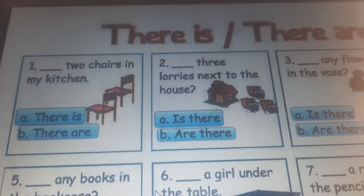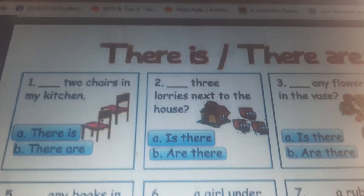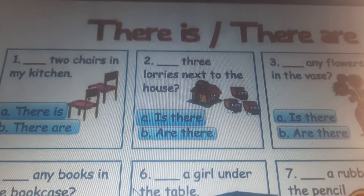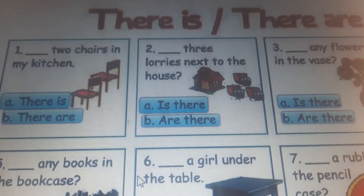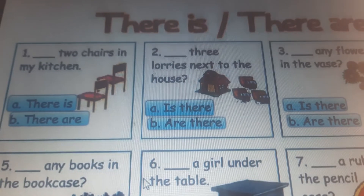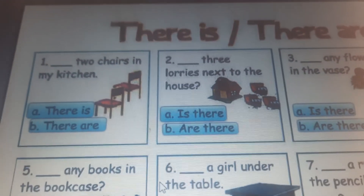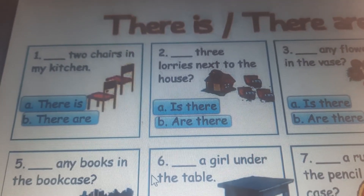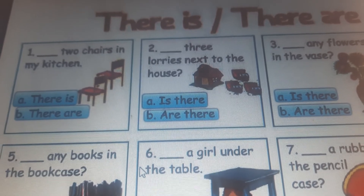Now you will make five sentences using 'there is' and 'there are'. You can make three or four sentences using 'there is' and two or three using 'there are', but at least five. You can write more if you want. You will write the sentences, then take pictures and send them in the WhatsApp group or directly to my number. Good luck — I'm waiting for your answers.